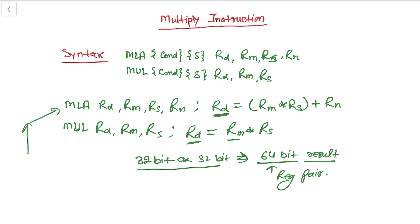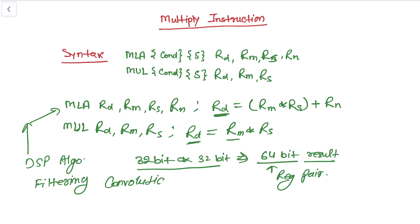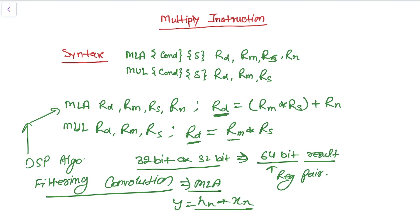This type of multiply and accumulate instruction is very useful in DSP algorithms, especially in filtering. While performing convolution — which uses the MLA-type multiply and accumulate instruction very frequently — the filter coefficients H(n) and the input X(n) get multiplied together to get the final output.